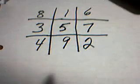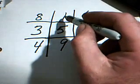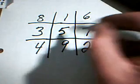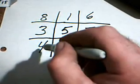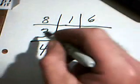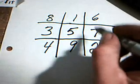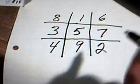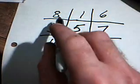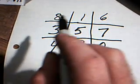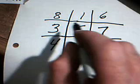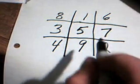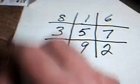8 and 1 is 9, plus 6 is 15. 6 and 5 is 11, plus 4 is 15. 3 plus 5 is 8, plus 7 is 15. 9 and 5 plus 1 is 15. 2, 5, and 8 is 15. 3, 5, 7 is 15. 4, 5, 6 is 15. It will add to 15 in every direction.